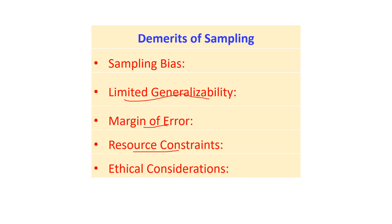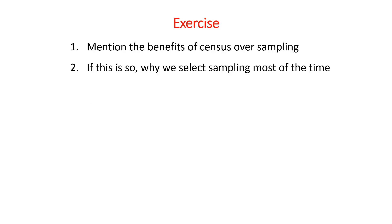This is another concern even though sampling takes fewer resources than a census. Another demerit is ethical consideration: when we collect data from respondents, we have to follow ethical principles and research ethics. This means we have to keep and protect the privacy of the respondents.